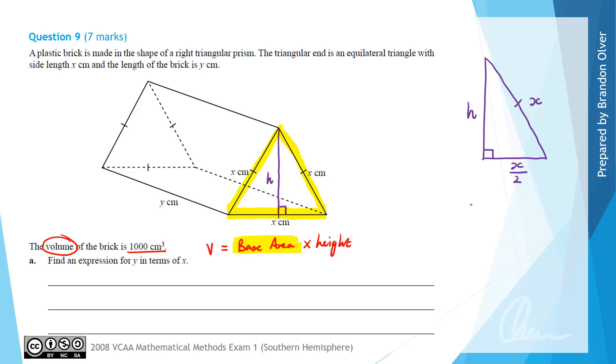Pythagoras' theorem says that c squared equals a squared plus b squared. Therefore x squared, the hypotenuse, is equal to h squared plus x over 2 squared. Therefore h squared equals x squared minus x squared over 4. Therefore h squared equals 3x squared over 4. If we take the square root of both sides, h is the positive value, the square root of 3 times x over 2. Now that we've got that information we can finally relate x and y in the volume equation.